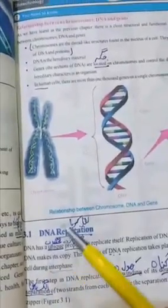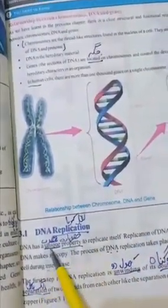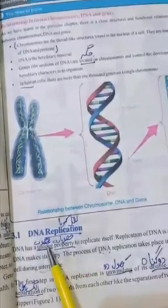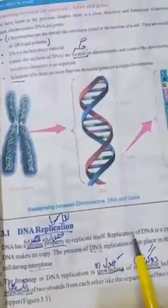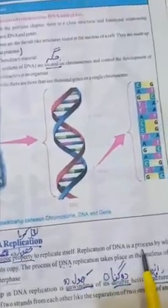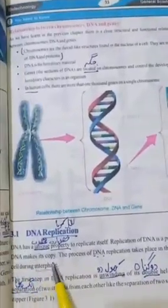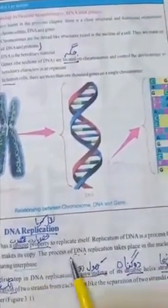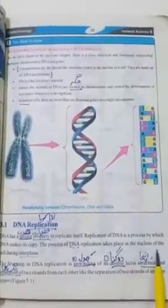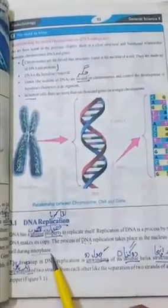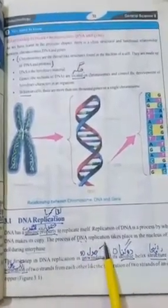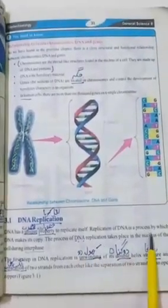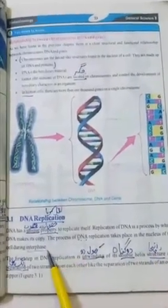Replication ka matlab hai copy taiyar kar lena — DNA replication. DNA has a unique property of replicating itself. Replication of DNA is the process by which DNA makes its copy. Yeh process nucleus mein hota hai, aur during interphase hota hai.